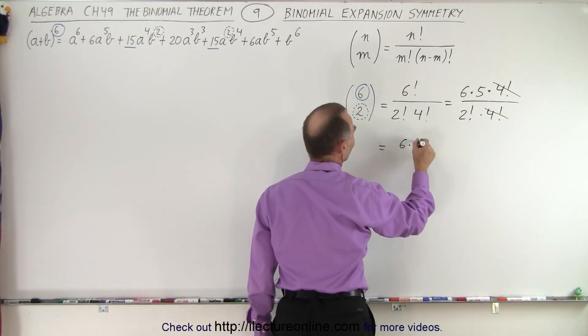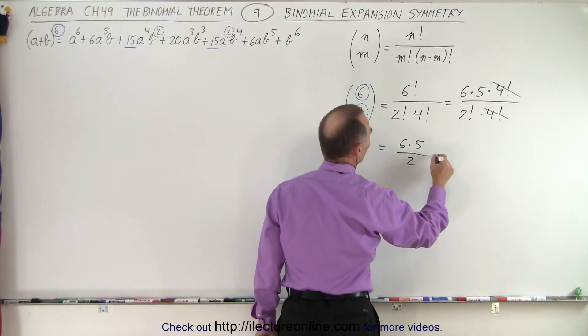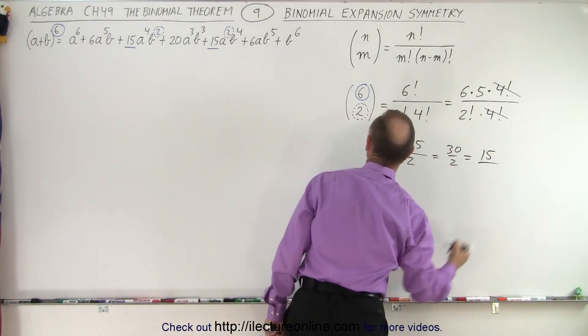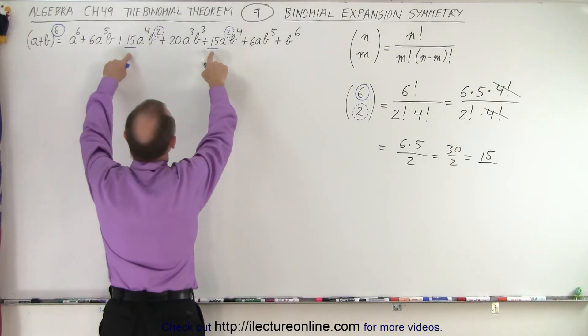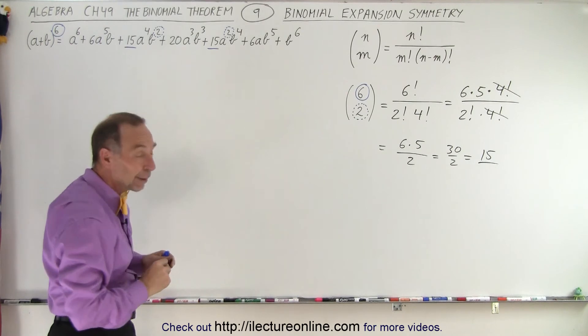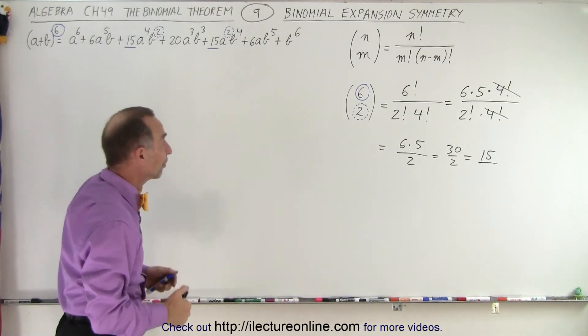And so we're left with 6 times 5 divided by 2, which is equal to 30 divided by 2, which is equal to 15. And sure enough, 15 is the numerical coefficient of both of those terms. That's why the perfect symmetry in the binomial expansion works so nicely for us.